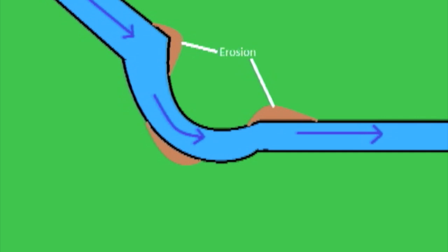This is called meander migration. Sometimes the scars of old meander bends can be seen next to the river.